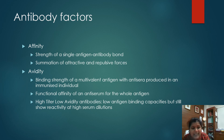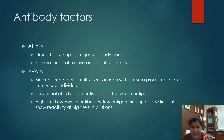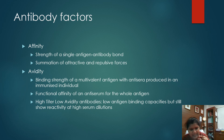The next is avidity. Avidity is the binding strength of a multivalent antigen with an antiserum produced in an individual. Affinity involves a single antigen and single antibody, while avidity is on a larger scale — a multivalent antigen with multiple binding sites interacting with an antiserum that also has multiple antibodies. This indicates the functional affinity of an antiserum to the whole antigen. Relevant here is HTLA — high titer, low avidity antibodies — which have low antigen binding capacity but still show reactivity at high serum dilution.